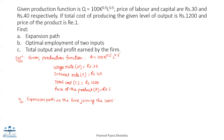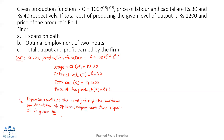The expansion path is the line joining the various combinations of optimal employment of two inputs. It is given by MPL divided by MPK equals W divided by R.